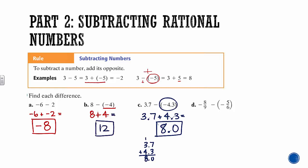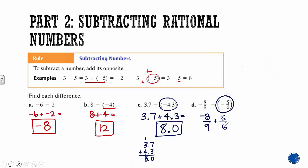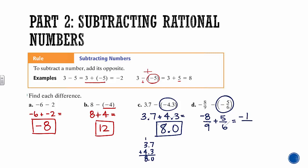Next: negative 8/9 minus negative 5/6. We change the subtraction to addition and add the opposite, so it becomes negative 8/9 plus positive 5/6. We already did 8/9 plus negative 5/6 earlier — only this time our 8/9 is the negative number. So because 8/9 is negative, our answer has to be negative. We already know the difference of 16/18 and 15/18, so it's just negative 1/18. Subtracting is basically addition with one more step.